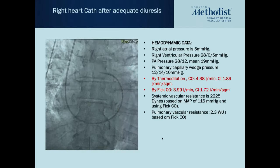Right heart catheterization after adequate diuresis showed: right atrial pressure 5, pulmonary artery systolic 28/12, mean PAP 19, wedge pressure 10. Despite adequate diuresis, both thermodilution and Fick cardiac output and cardiac index were low, pulmonary vascular resistance within normal limits, and SVR was elevated. Given new-onset heart failure with a regional wall motion abnormality, the team proceeded to cardiac catheterization.